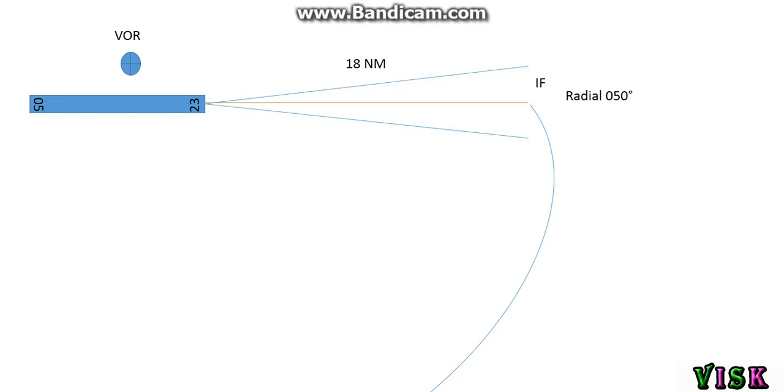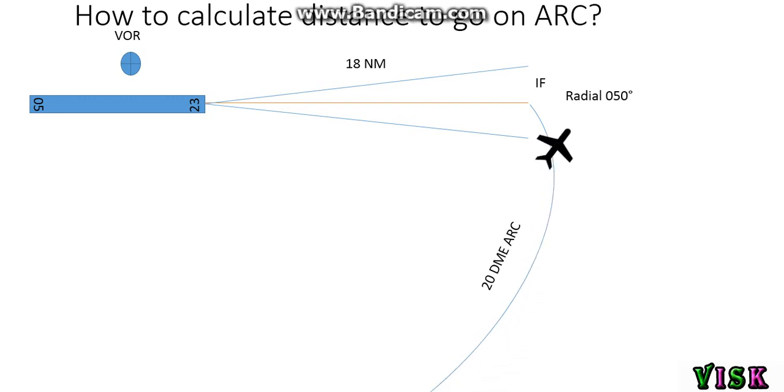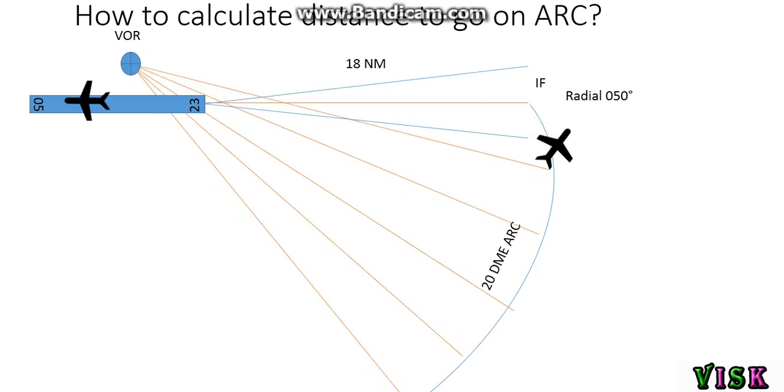Follow this sample: runway 23. We got information we are on radial 050 from intermediate fix to runway or to VOR, and ATC cleared to follow a 20 DME arc. We fly from initial fix to intermediate fix and from intermediate fix to the runway. We already know from intermediate fix to the runway is 18 nautical miles, but from initial fix to intermediate fix, how many nautical miles and how to calculate?